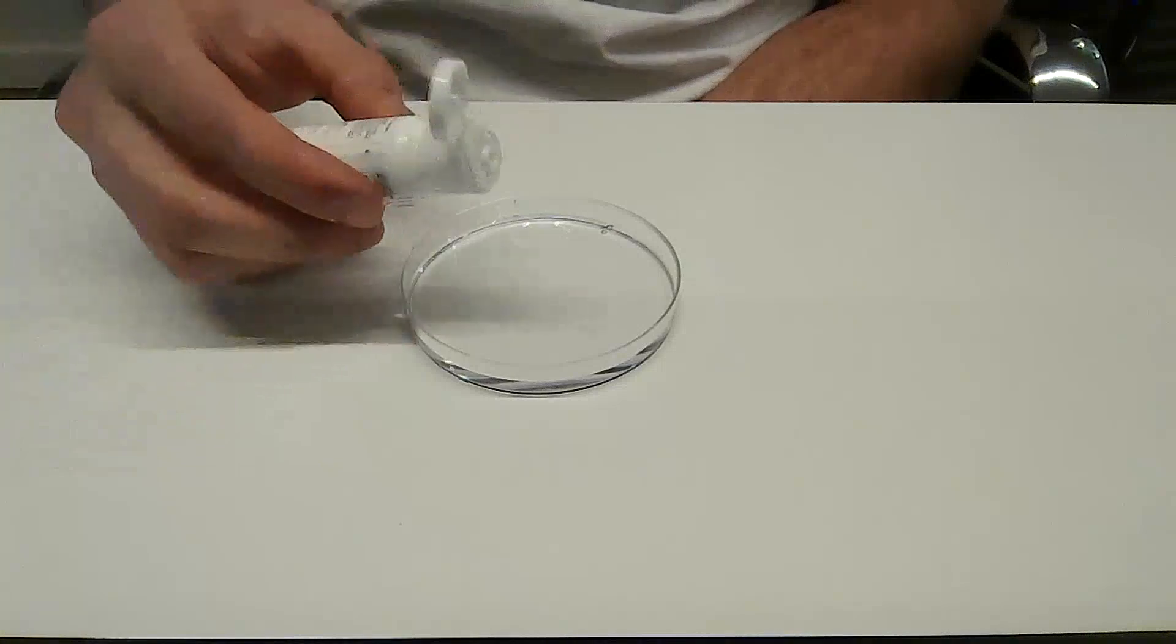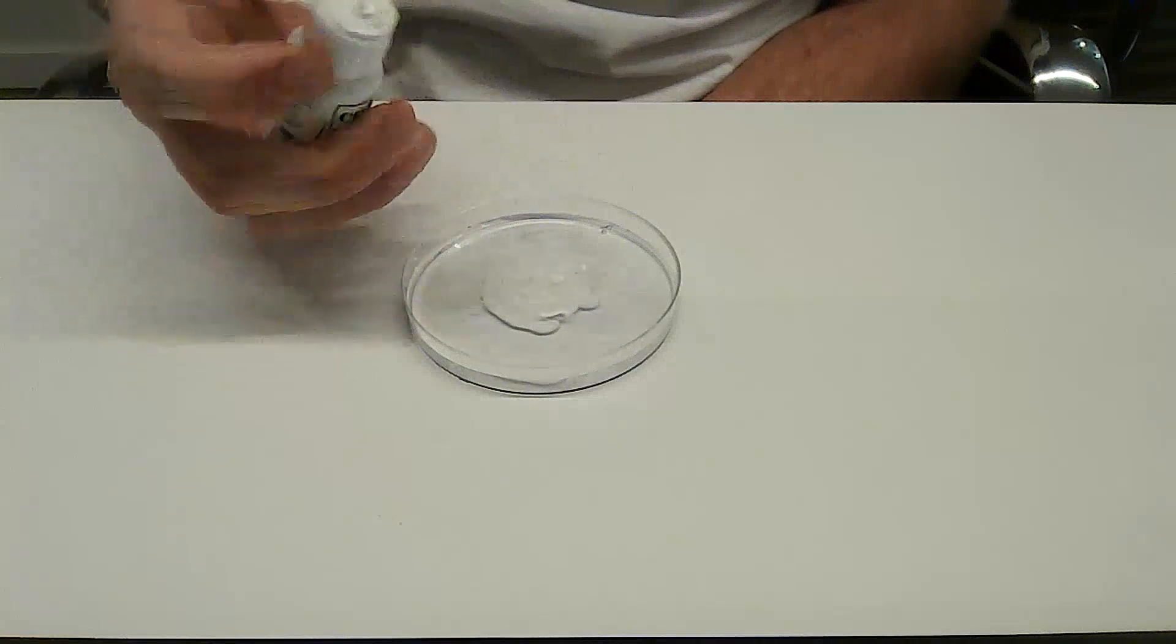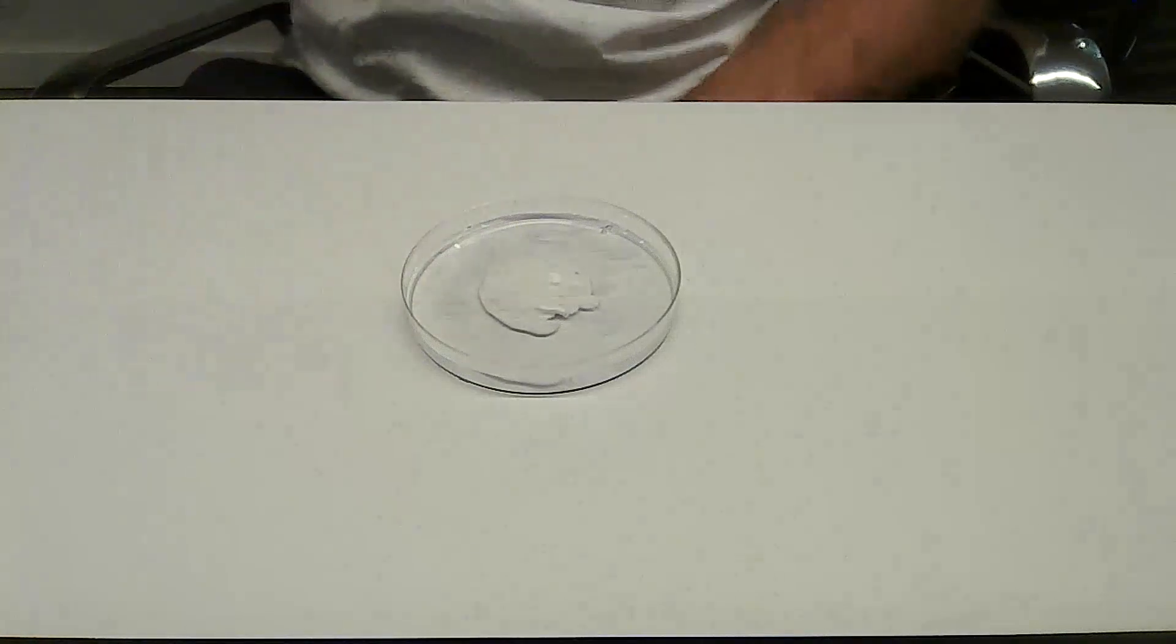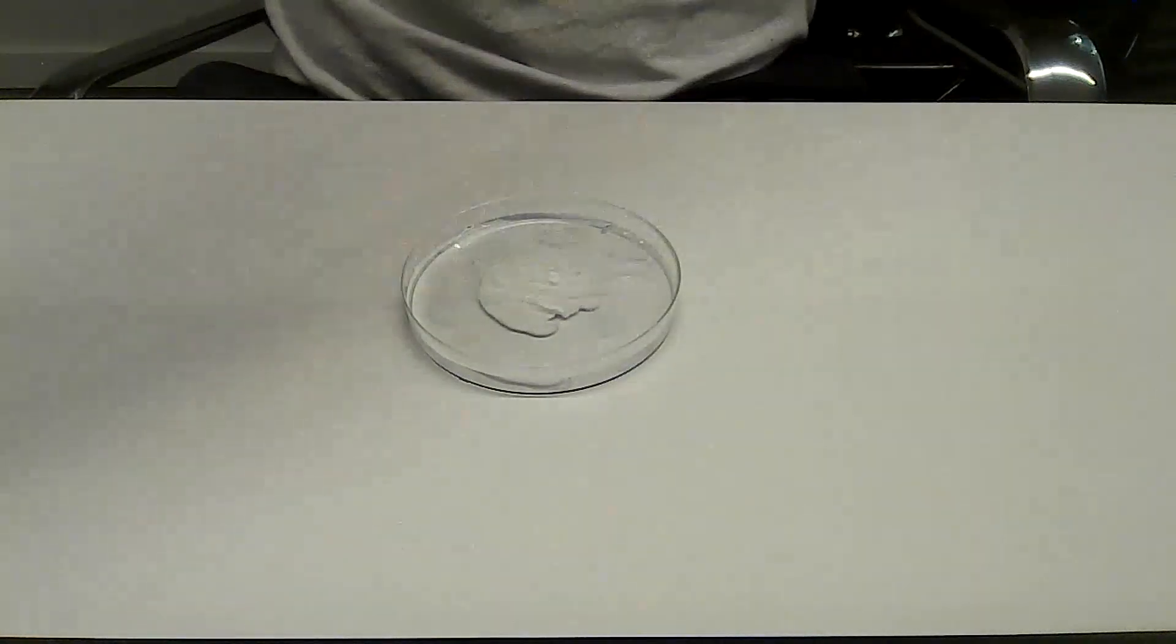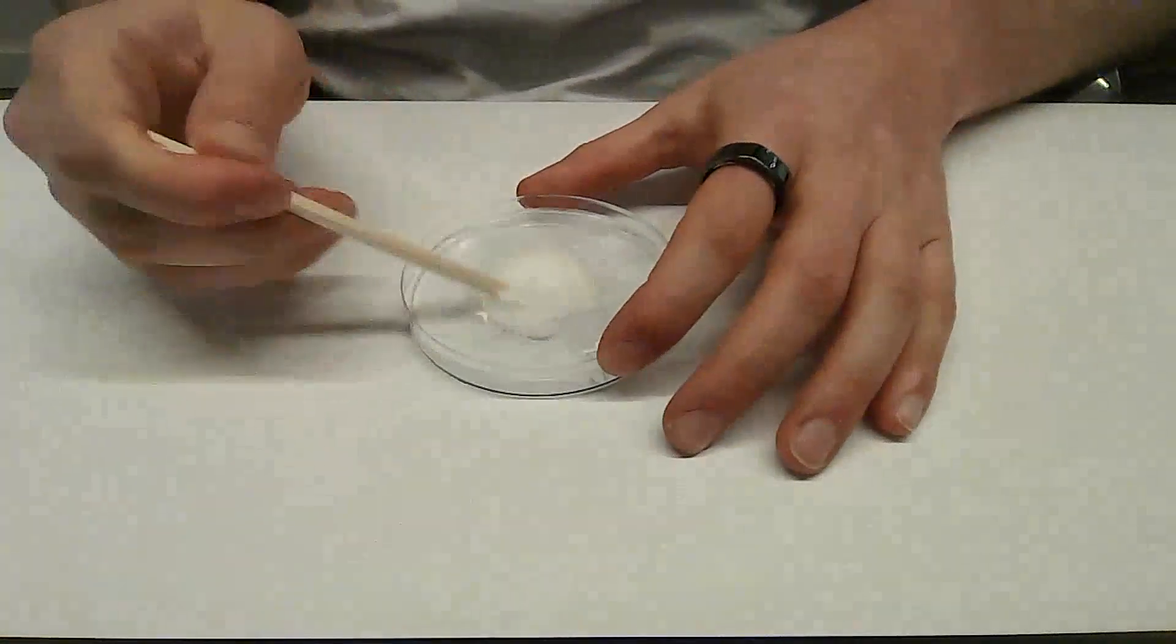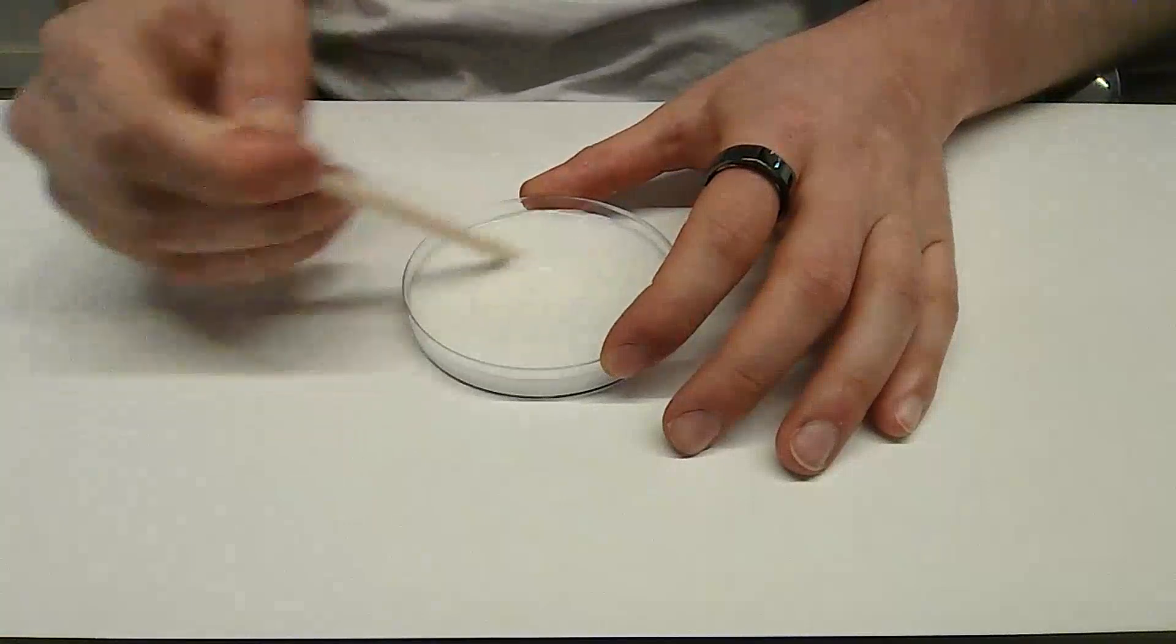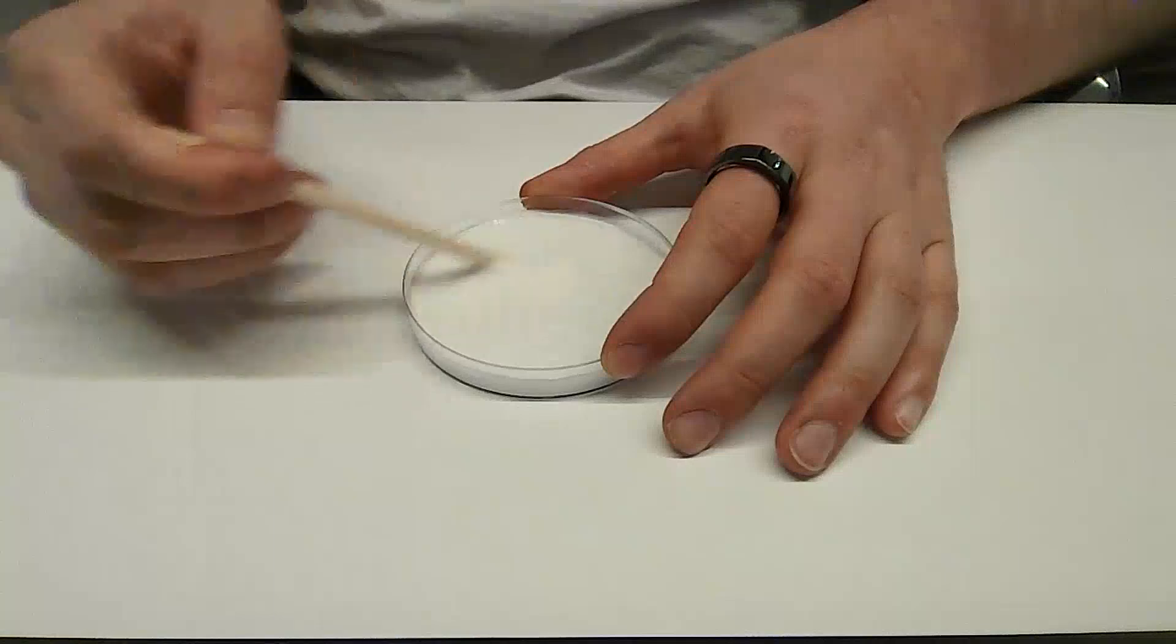So we're going to mix this food dye with the water. I recommend using a decent amount. The thicker the liquid is, the more dye that we use, the better it will look, but you certainly don't need to use the whole bottle. So I think I did about 15, 20 drops there.